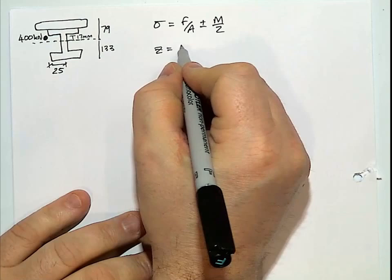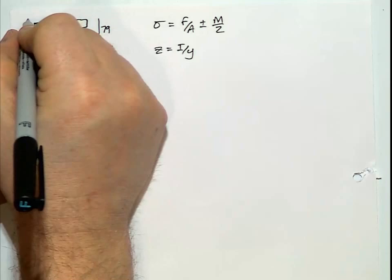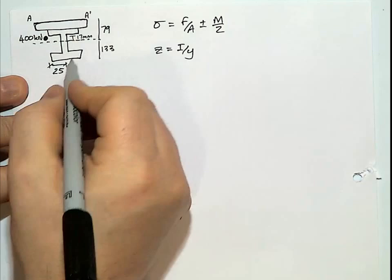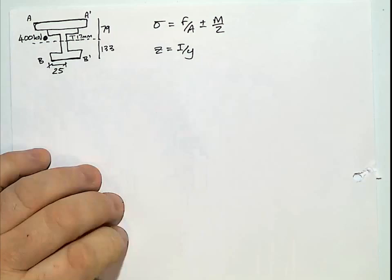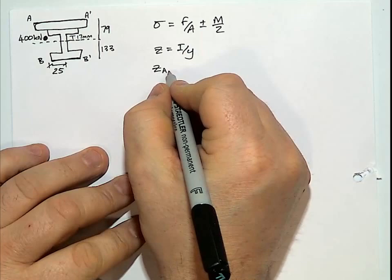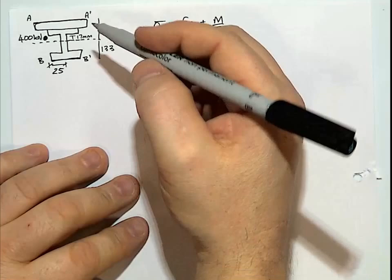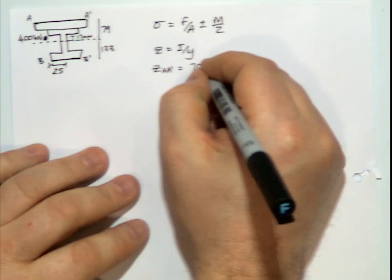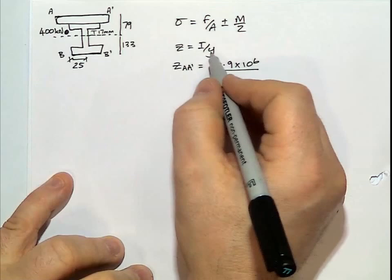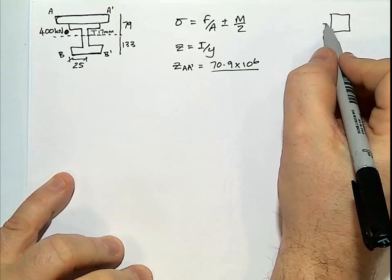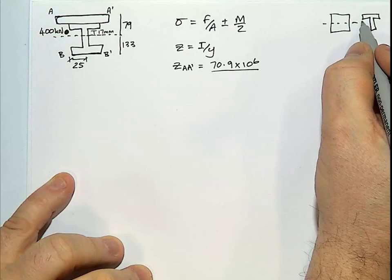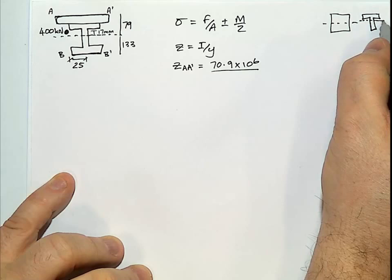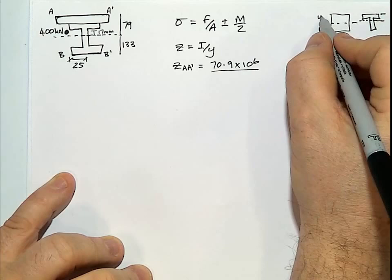So if we start looking at our bending stress first. Our Z is I over Y. What I'll do, we'll call the top part A, A dash. That's along that line. And we'll go along the bottom there. That would be B, B dash. If we wanted to try and work out what, Z along A, A dash. We've got to take the I value across our XX. So that was 70.9 times 10 to the 6. In terms of our Y, whenever we've had a rectangle, our Y has always been half of D. But if you have a T shape, it means that our neutral axis is a little bit higher.